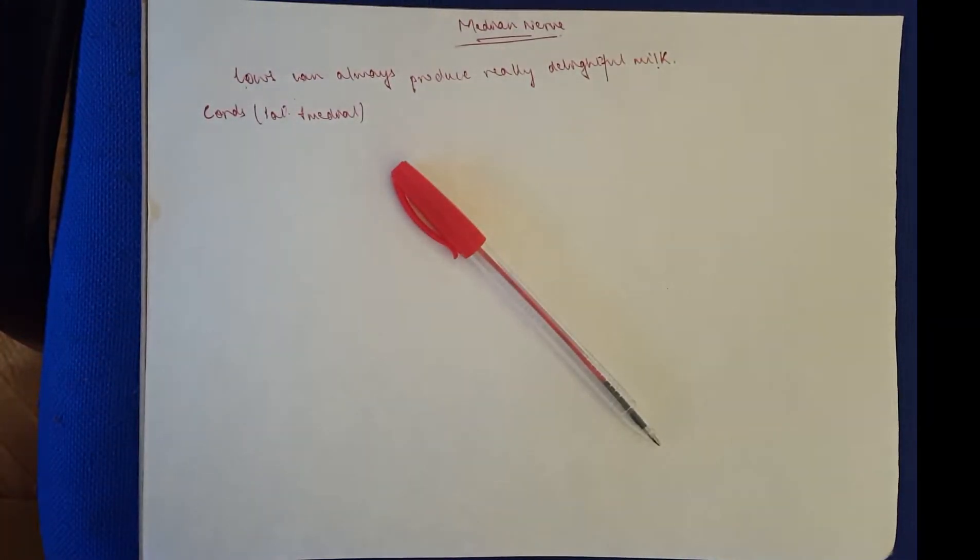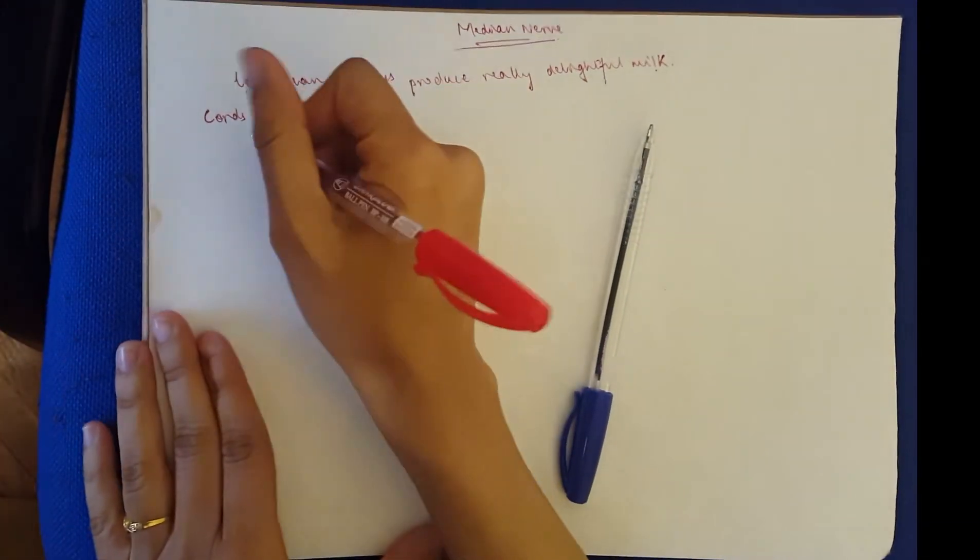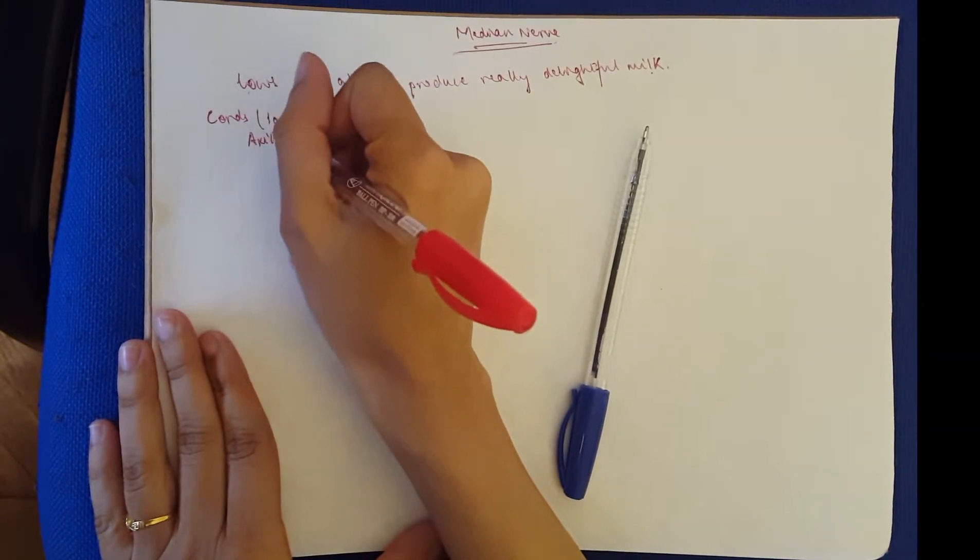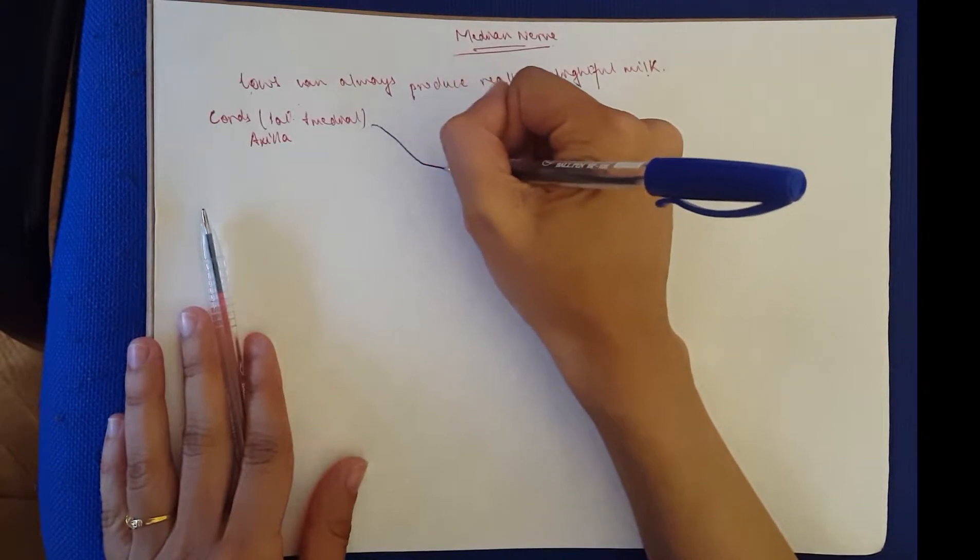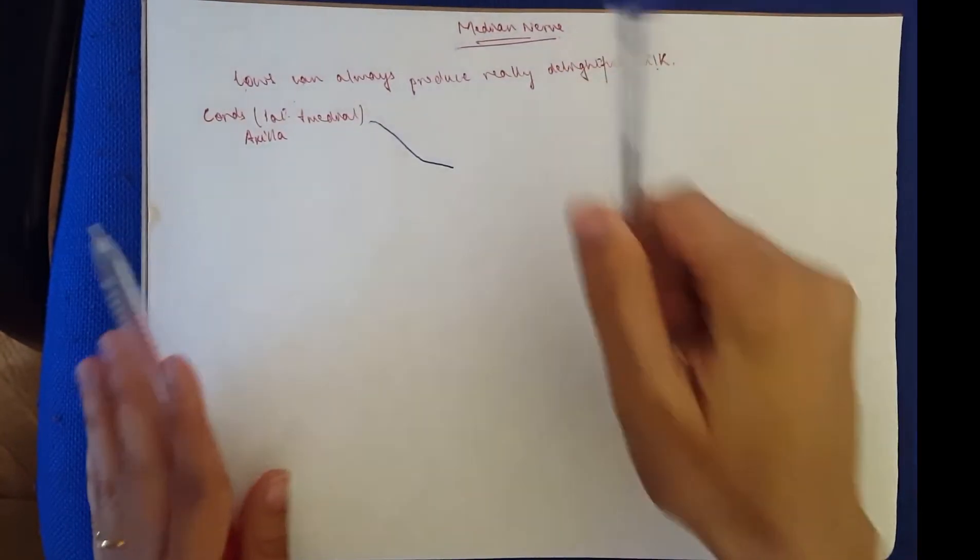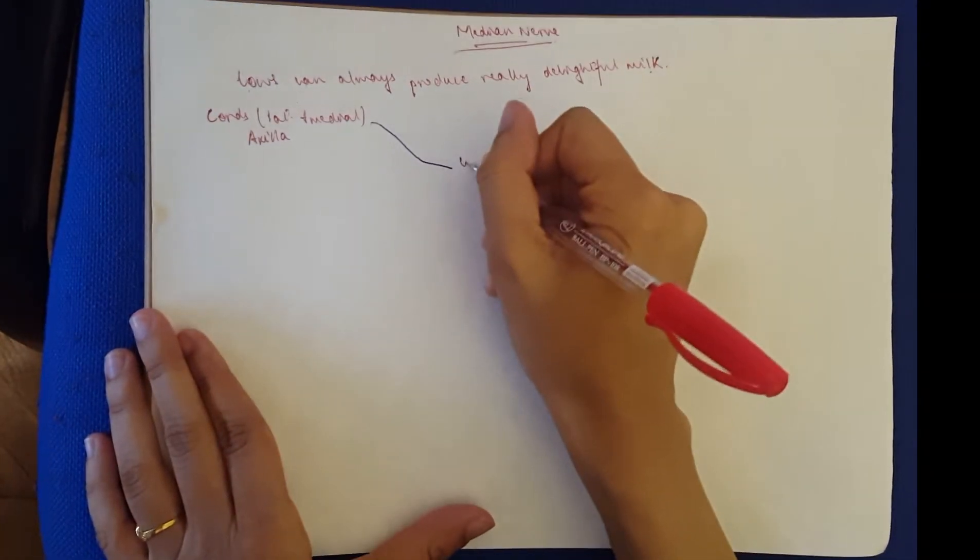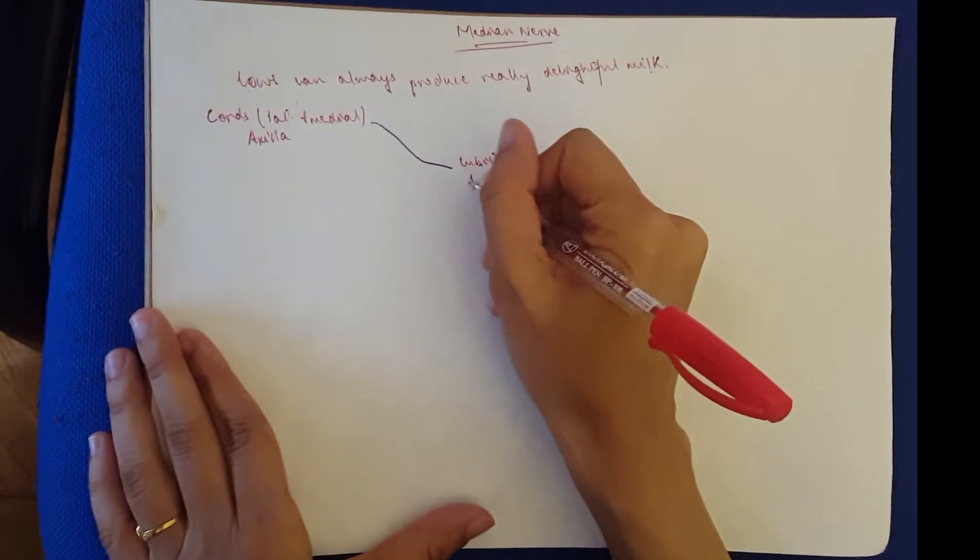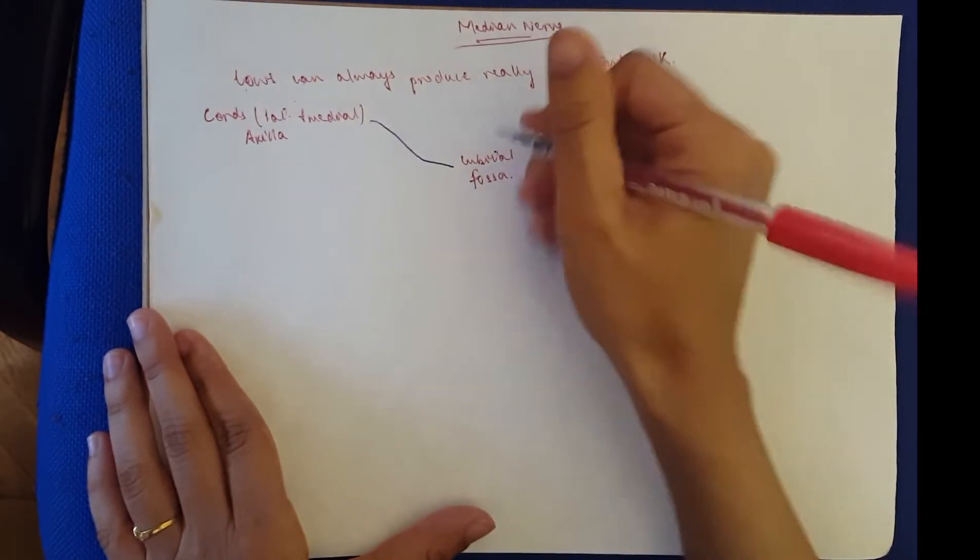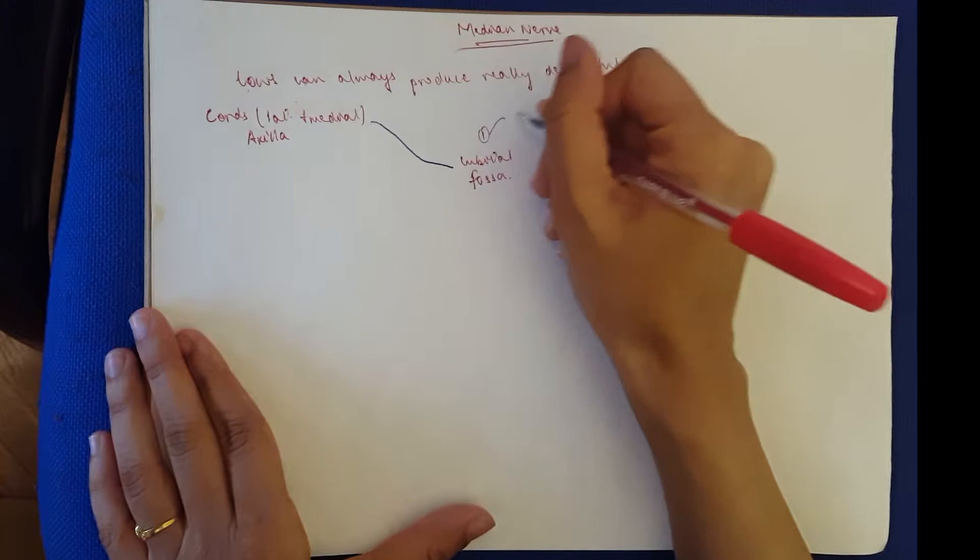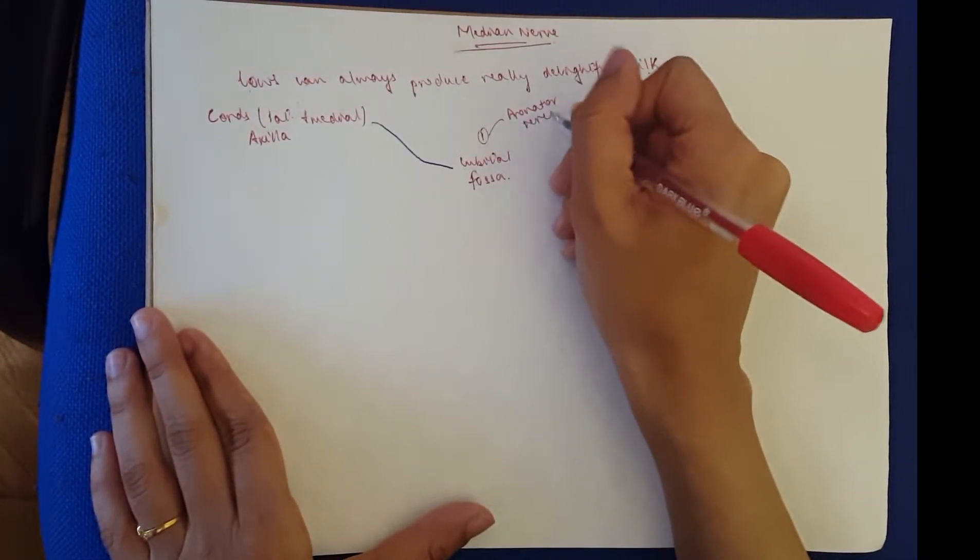When it comes from the cords, it comes from the axilla because that's where the brachial plexus is. As it travels down the arm, it travels along with the brachial artery between the biceps brachii and brachialis and enters the cubital fossa. As it enters the cubital fossa, it gives off a branch to pronator teres.